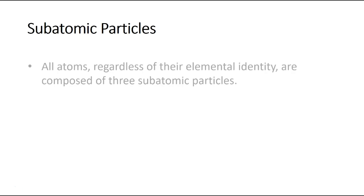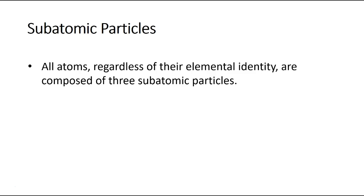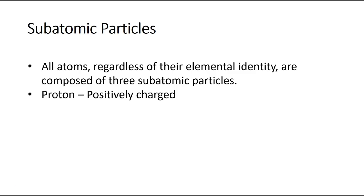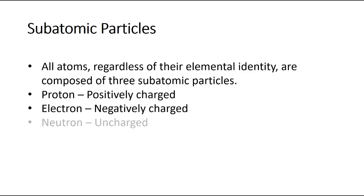What are subatomic particles? Well, they're the things that all atoms are made of. All atoms — it doesn't matter what the elemental identity of the atom is, it could be a carbon atom, it could be a hydrogen atom — they're all composed of three subatomic particles: the proton, which is positively charged; the electron, which is negatively charged; and the neutron, which has no charge.